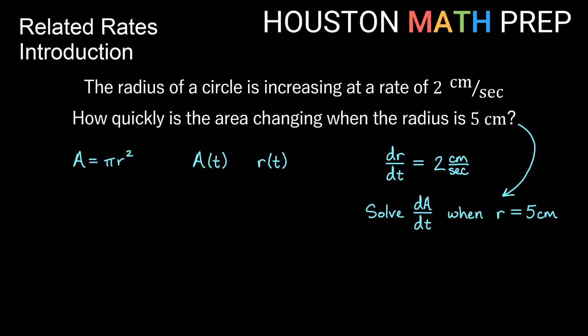If we look at our lower statement here, how quickly is the area changing says to solve the rate of change of the area when the radius is 5 centimeters. So we'll be solving for dA/dt when r is equal to 5 centimeters.